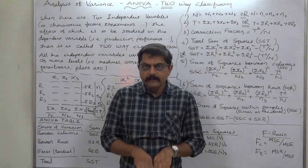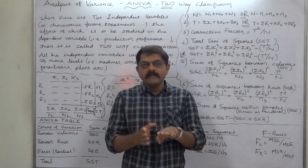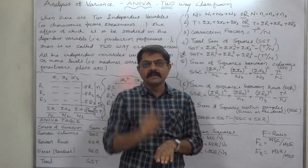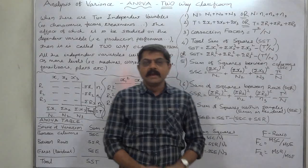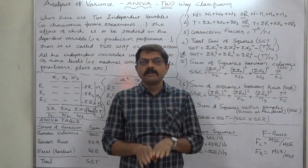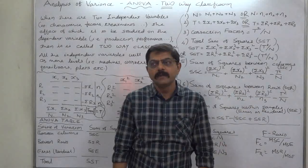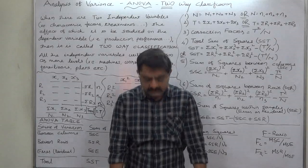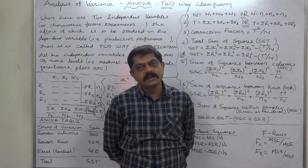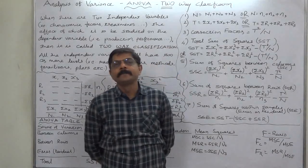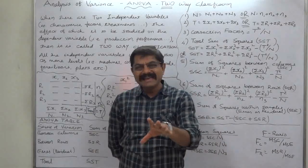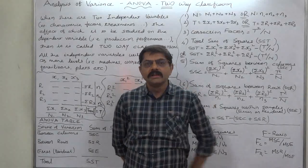The dependent variable remains single — production or performance. When we are interested in checking the effect of various levels of a single independent variable on the single dependent variable, it is called one-way classification. When we check the effect of various levels of two independent variables on a single dependent variable, it is called two-way classification. Both independent variables are under the full control of the researcher, who can manipulate them to study the effect on the dependent variable.